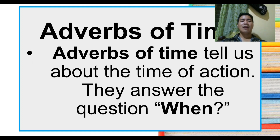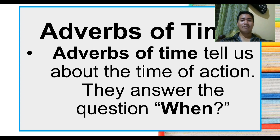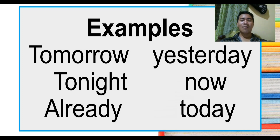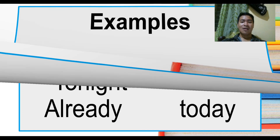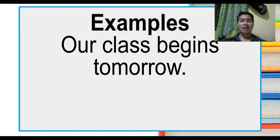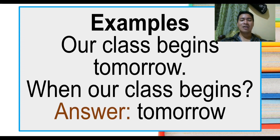Adverbs of time tell us about the time of an action. They answer the question when. Remember, adverbs of time answer the question when — we are referring to the time. Examples: tomorrow, yesterday, tonight, now, already, and today. Sentence example: our class begins tomorrow. When does our class begin? The answer is tomorrow.